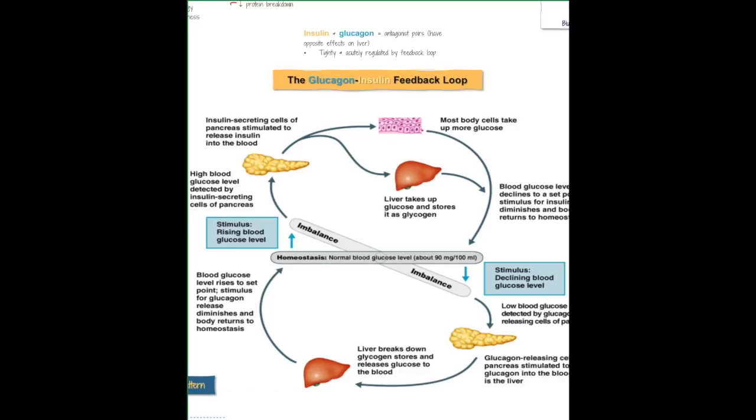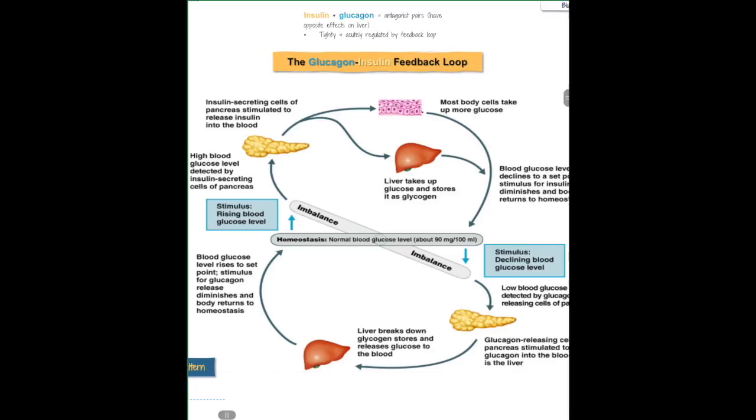When we think of the pathophysiology of diabetes type 1 and type 2, this is usually what we imagine or what we think of, this glucagon insulin feedback loop. So I'm going to go over it really quickly. If you're struggling with any of these concepts, make sure you go back and check out the video that I did on what insulin does in the body. It will really help to solidify some of the details behind what we're going to talk about.